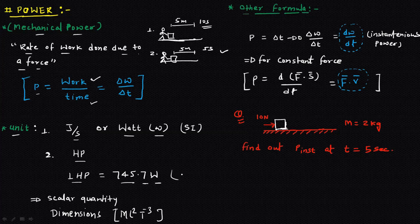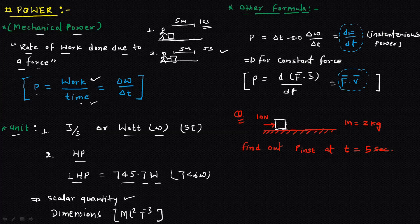Power is the ratio of work and time. Since both work and time are scalar quantities, power is also a scalar quantity. The dimension of work is ML²T⁻², and since we are dividing by time, the dimension of power is ML²T⁻³.